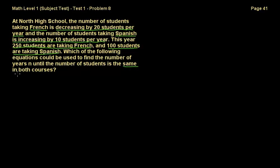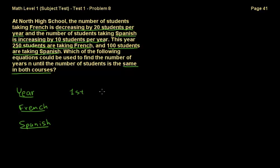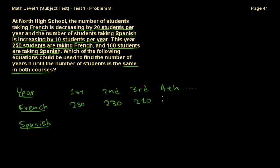So we're searching for them to be the same in both courses. Let me write down years, French, and Spanish. In the first year you have 250 students taking French. In the second year they decrease by 20, so that's 230. In the third year it's 210, and in the fourth year it's 190. A pattern starts to pop up — each year you decrease the number 250 by 20 students.